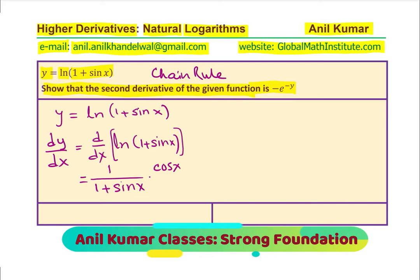Now, derivative of ln x is 1 over x times the derivative of the inside function, which is cosine x. So, we have the derivative. Now, we need to find the second derivative of this function. So, we can differentiate using the quotient rule, right? So, we can now apply the quotient rule.